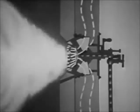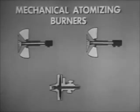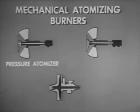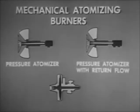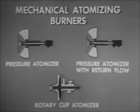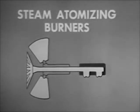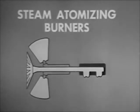Although all burners perform these two functions — atomizing the oil and mixing it with air — different types of burners atomize the oil in different ways. Most burners are mechanical atomizing burners. Some mechanical atomizers are the pressure type. There is also a return flow pressure atomizer. Another mechanical atomizer is the rotary cup type. A few burners use steam atomizers. In this film, we will see how these different types of burners work.